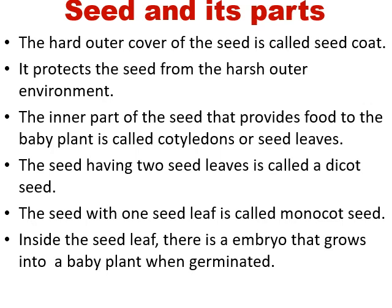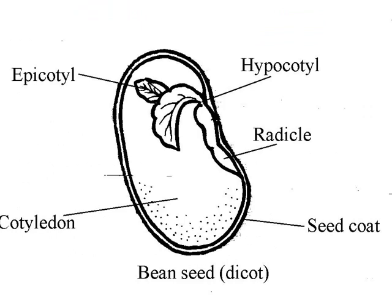Now, inside the seed leaf there is an embryo which grows into a baby plant when it germinates. This is the diagram of your seed and its parts — the bean seed, a dicot seed. You can take kidney bean or any type of bean. The hard outer covering is the seed coat. The soft part which provides food for the baby plant is the cotyledon. The part from where the baby plant grows is the radicle. Then there is hypocotyl and epicotyl. So this is your seed and its parts.